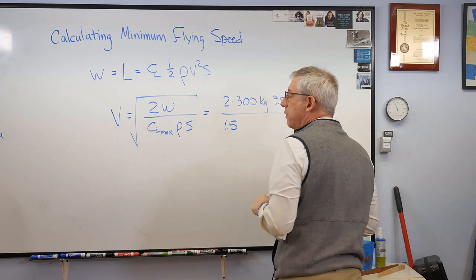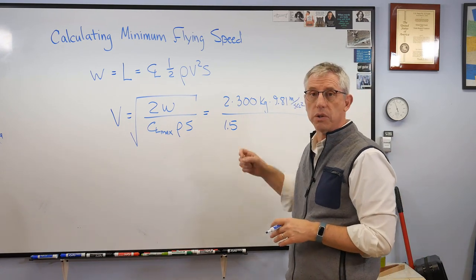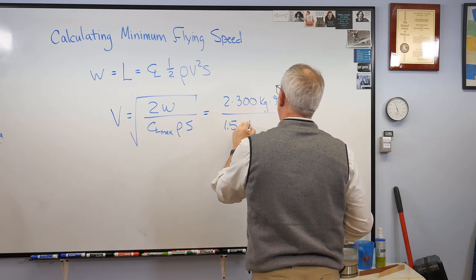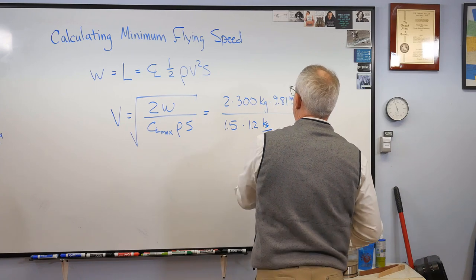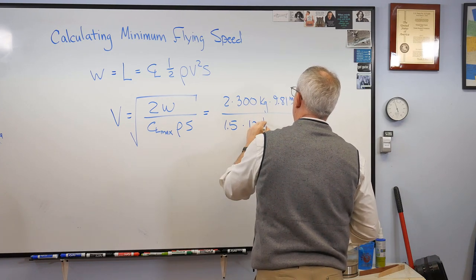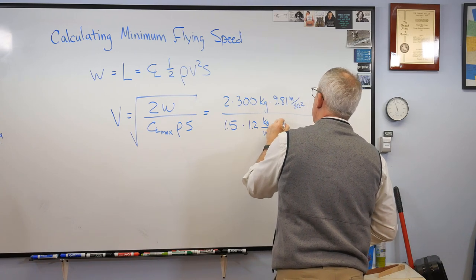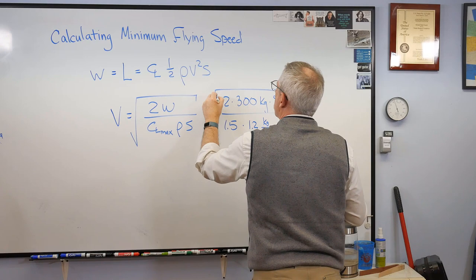So coefficient of lift of 1.5. Remember, lift coefficient is non-dimensional. There's no units associated with this. So we're good there. Rho. Okay, so I'm going to say 1.2 kilograms per cubic meter times 14 meters squared. Take the square root of all that.